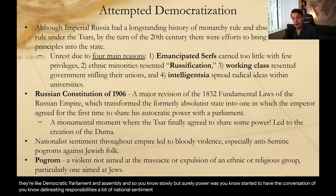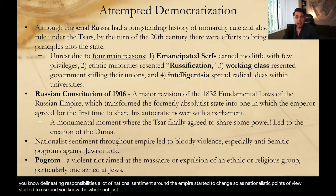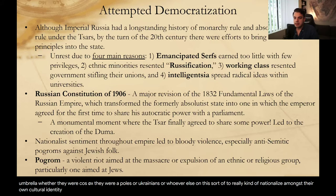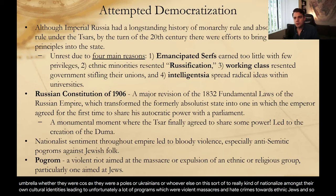A lot of national sentiment around the empire started to change. As nationalistic points of view started to rise, not just Russification under the ethnic Russians, but anyone else under the Russian umbrella — whether they were Kazakhs, Poles, Ukrainians, or whoever else — they started to really nationalize amongst their own cultural identities, leading unfortunately to a lot of pogroms, which were violent massacres and hate crimes towards ethnic Jews.